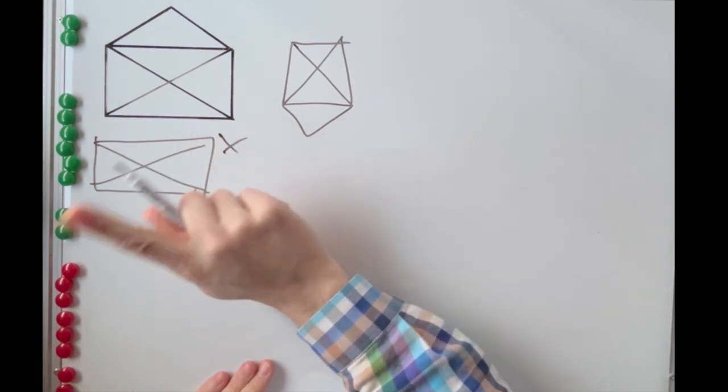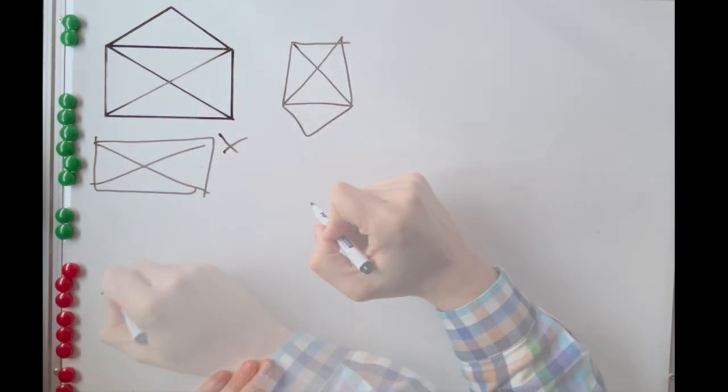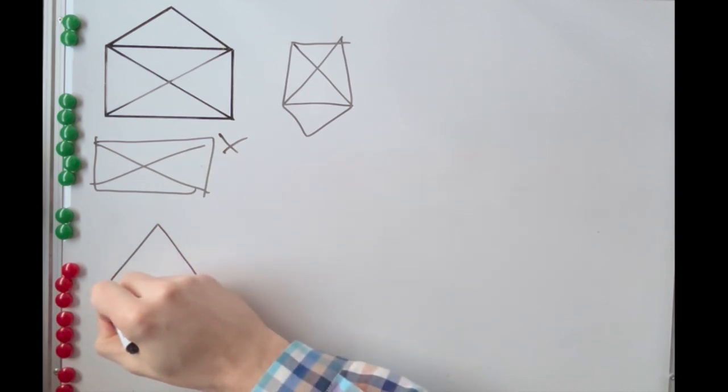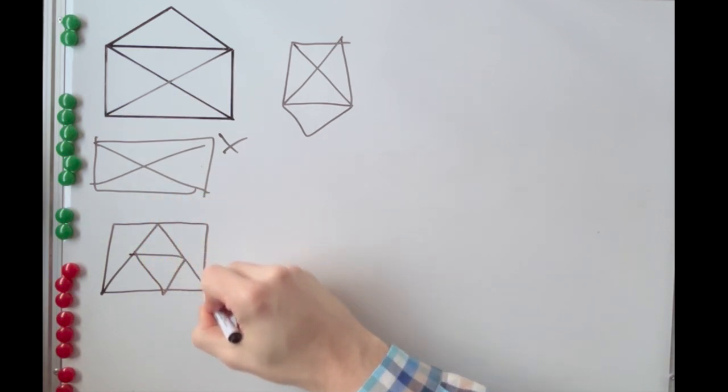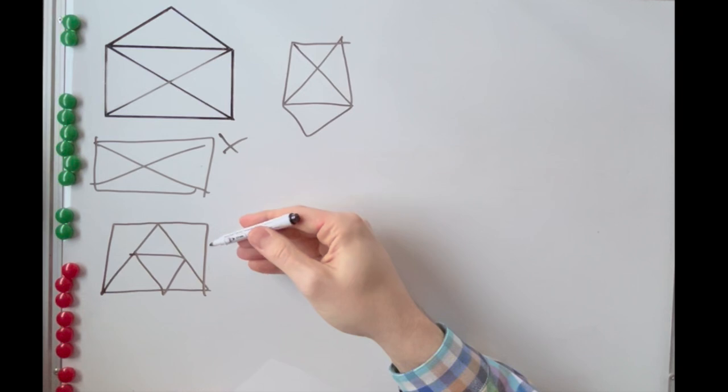You've probably realized that it's impossible to draw it this way, but the more complex the shape, the harder it is to figure out if it's possible. Next, we'll explain how to quickly determine whether any shape can be drawn this way, and if so, where to start and how to do it.